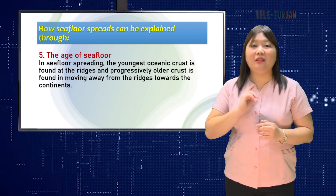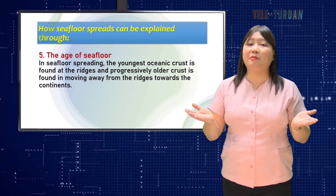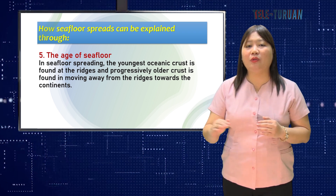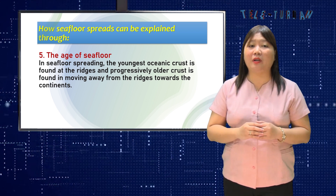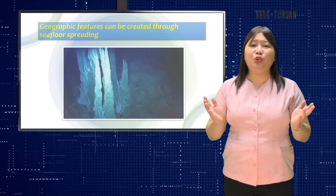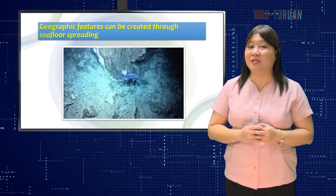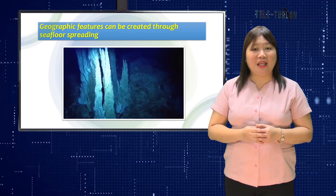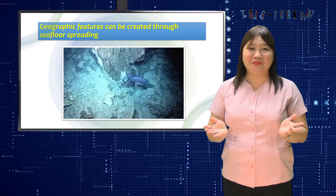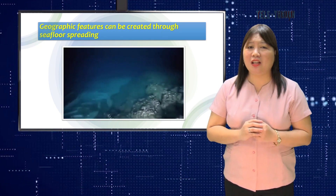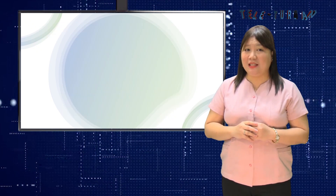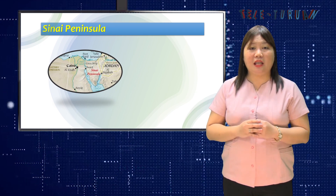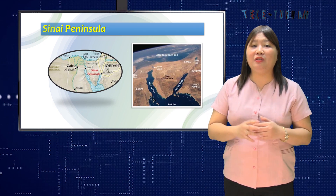Number five, the age of the seafloor: in seafloor spreading, the youngest oceanic crust is found at the ridges and progressively older crust is found moving away from the ridges towards the continents. In the end, new geographic features can be created through seafloor spreading. For example, the Red Sea was created as the African plate and the Arabian plate tore away from each other. Eventually, geologists predict that seafloor spreading will completely separate the two continents, with the Sinai Peninsula connecting the Middle East with North Africa, joining the Red and Mediterranean seas.